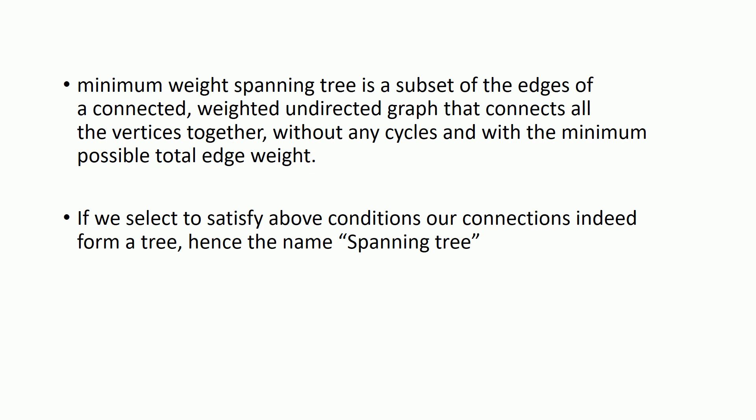For the sake of completeness, let me formally define the minimum spanning tree of a graph. A minimum weighted spanning tree, or minimal spanning tree, is a subset of the edges of a connected weighted undirected graph that connects all vertices together without any cycle and with a minimum possible total edge weight. If we select a set of edges to satisfy the above condition, our connections indeed form a tree, hence the name spanning tree.